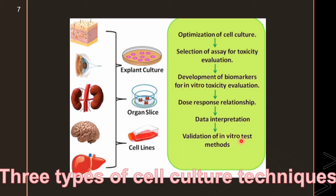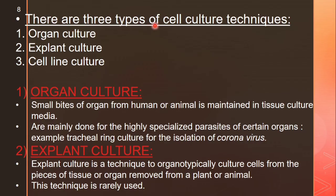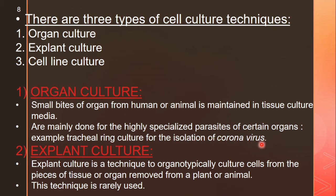There are three types of cell culture techniques. The first is organ culture, the second is explant culture, and the third is cell line culture. In organ culture, small pieces of organ from human or animal are maintained in a tissue culture media. This is mainly done for highly specialized parasites of certain organs — for example, tracheal ring culture for the isolation of coronavirus.